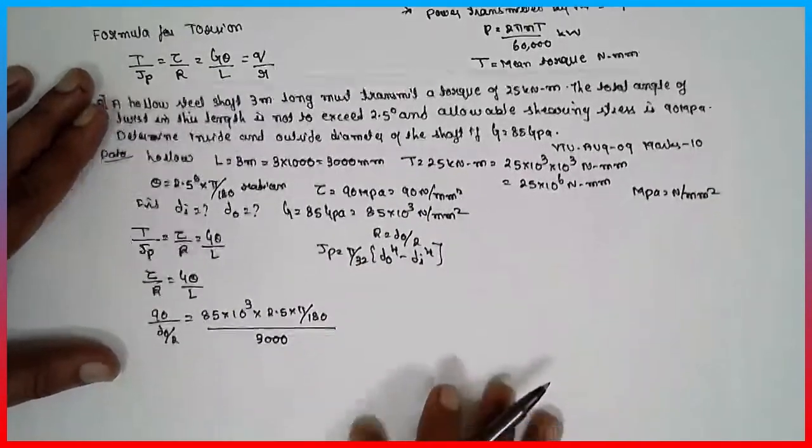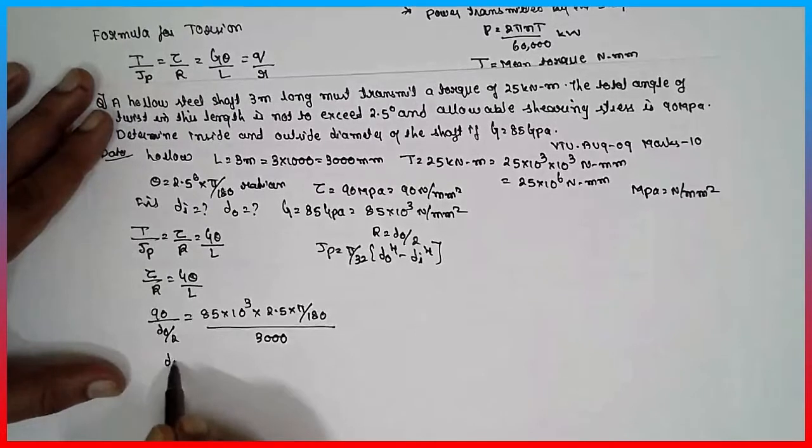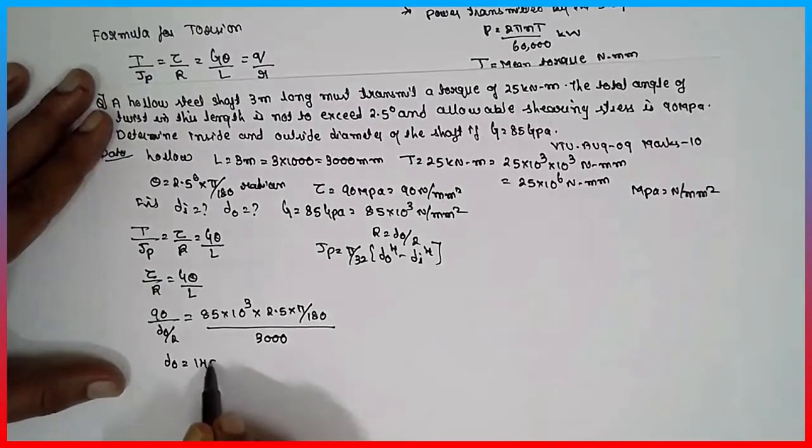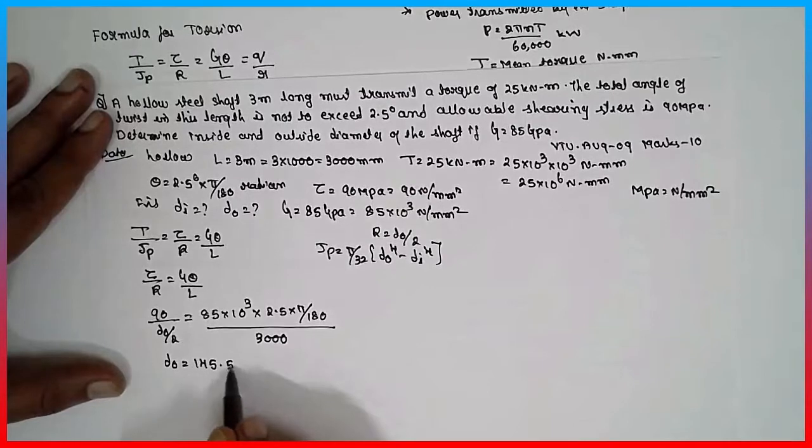Cross multiply, you will get D naught is equal to 145.59 mm.